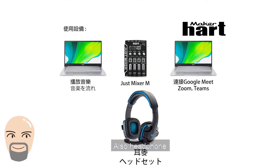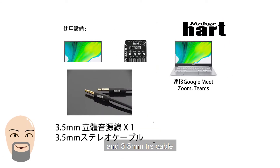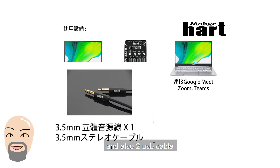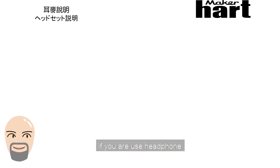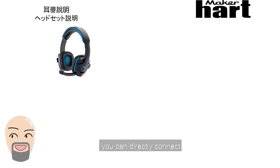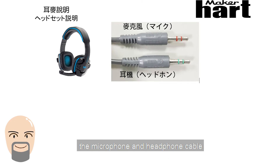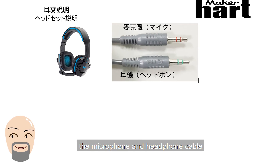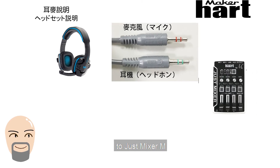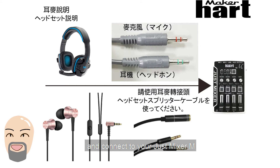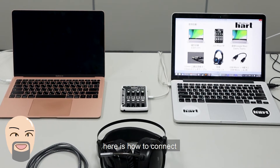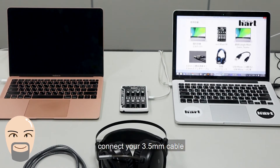Also a headphone, a 3.5 millimeter TRS cable, and two USB cables. For your information, if you are using a headphone you can directly connect the microphone and headphone cable to the just mixer amp, but if you use an earphone you have to use an audio switcher cable and connect it to your just mixer amp.